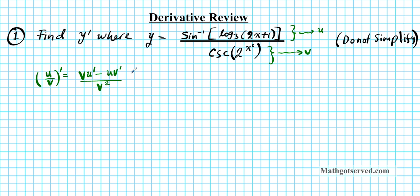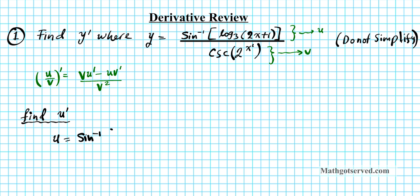Let's start with the numerator and find u'. u is the numerator function, which is the arc sine of log base 3 of 2x plus 1. We have a composition of three functions here: the inverse sine, which is a trig function; log base 3, which is a logarithmic function; and a linear function.